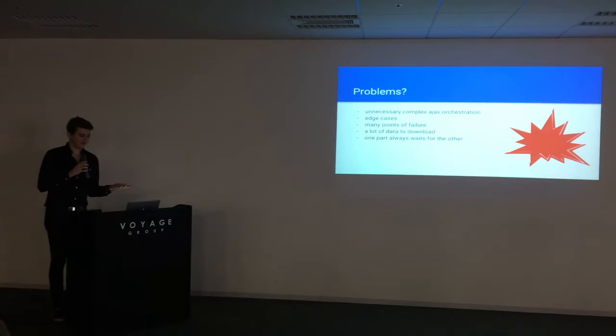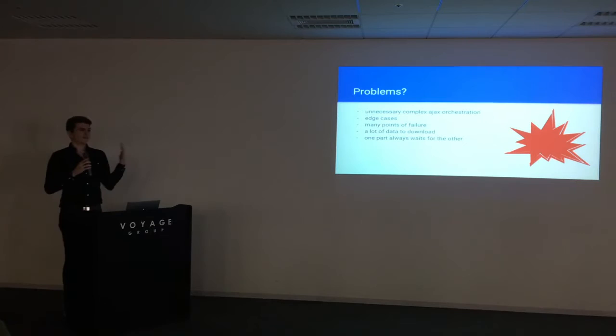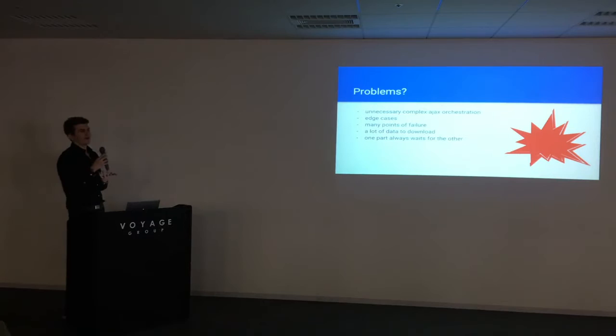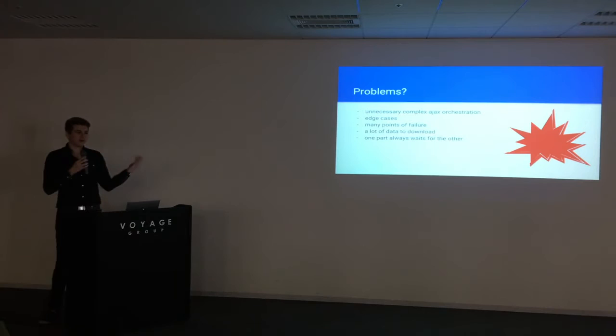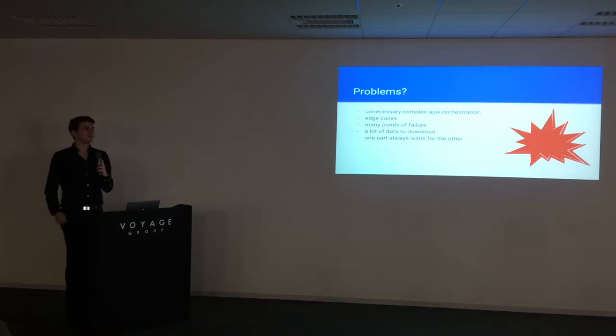Another problem: because we decoupled our data so well, we have a lot of data to download. For example, in our post example, we have the name of the user in there, but we would download the entire user document just to get that data — and we only use the username and throw away the rest, which is obviously not good. Another thing is that one part always waits for the other. For example, if we want a photo inside the user profile, we have to talk to the server people and say we now want a photo in this API endpoint. So even though we already have it kind of finished in our app, we have to wait until the new version of the API is deployed. Or the other way around — if the server already has it but we don't use it, we download that data and just throw it away.